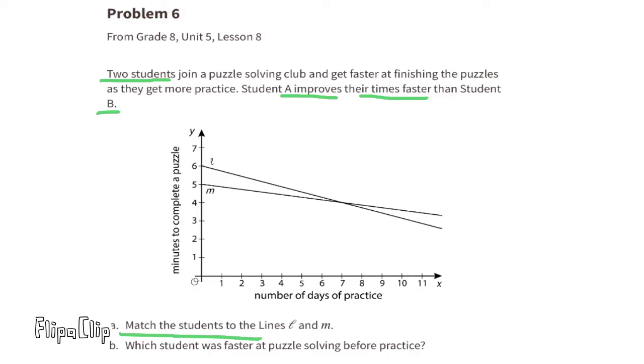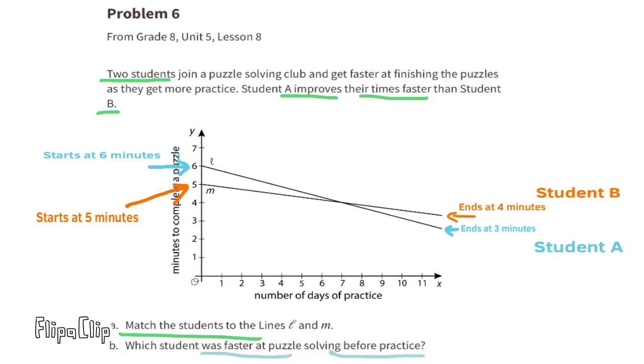The horizontal axis, or the x-axis, represents the number of days of practice, and the vertical axis, or the y-axis, represents minutes to complete a puzzle. Line L starts at 6 minutes. On the first day, it took 6 minutes to complete a puzzle. As the days progressed, eventually, it's taken them less than 3 minutes to complete a puzzle. Line M starts at 5 minutes and ends at 4 minutes. Student A is represented by line L, and student B is represented by line M.